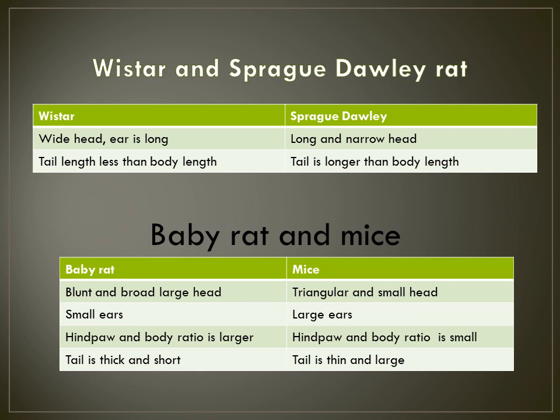How to differentiate between a baby rat and a mouse? A baby rat has a blunt, broad, large head, whereas a mouse has a triangular and small head relative to body size. A baby rat has small ears, while a mouse has large ears. The hind paw to body ratio is larger in baby rats, whereas for mice it is small. Baby rat tail is thick and short, whereas for mice it is thin and long.